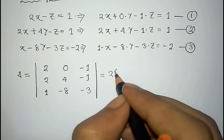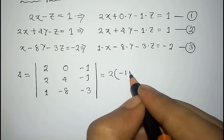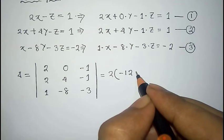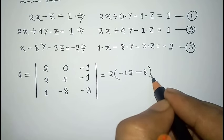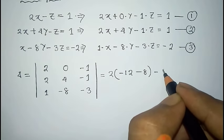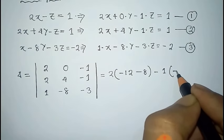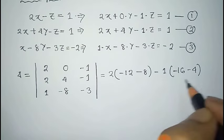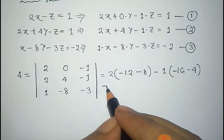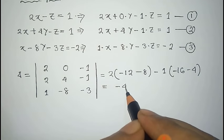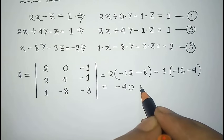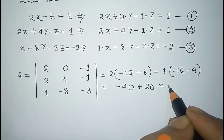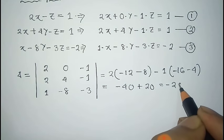The value of this determinant we get as 2 into (minus 12 minus 8) minus 1 into (minus 16 minus 4). This gives minus 14 plus 20, so the value of delta is minus 20.